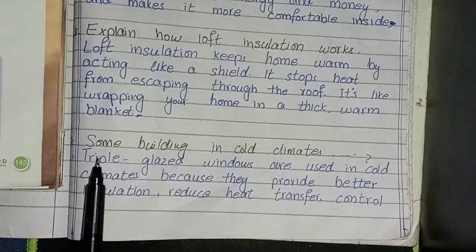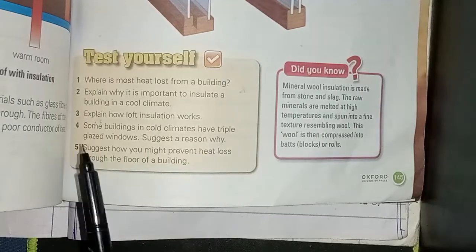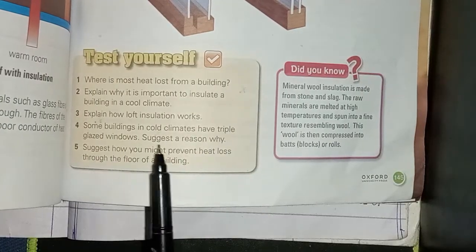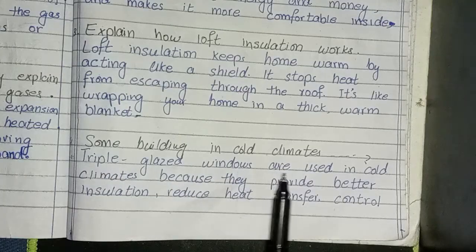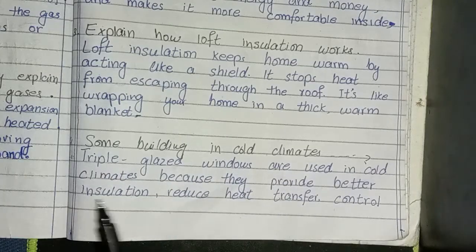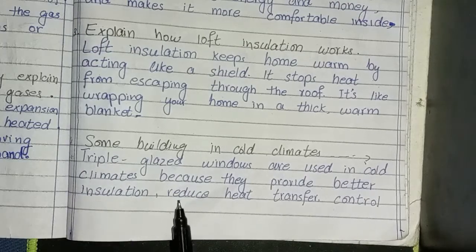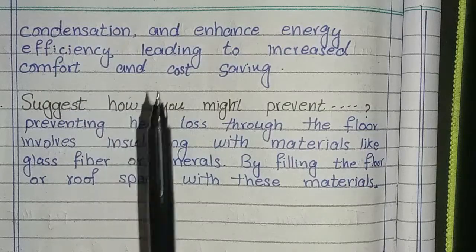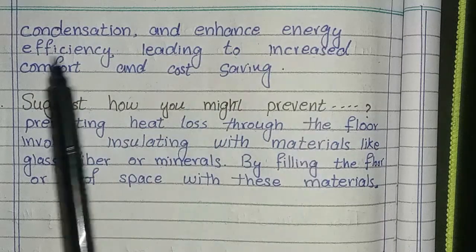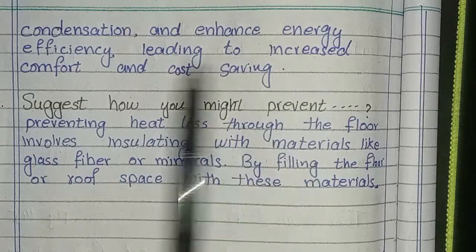4th question: some buildings in cold climates have triple glazed windows. Suggest a reason why triple glazed windows are used in cold climates. Answer: because they provide better insulation, reduce heat transfer, control condensation, and enhance energy efficiency, leading to increased comfort and cost saving.